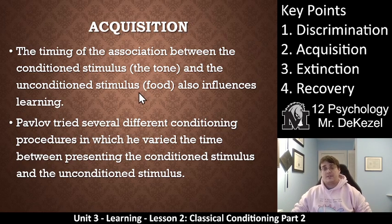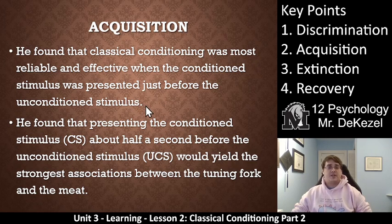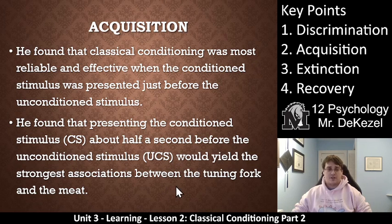The same applies to humans, but focusing on dogs for now: Pavlov found that classical conditioning was most reliable and effective when the conditioned stimulus was presented just before the unconditioned stimulus. Presenting the conditioned stimulus about half a second before the unconditioned stimulus yielded the strongest association between the tuning fork and the meat — essentially as close together as possible.